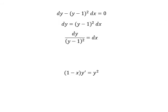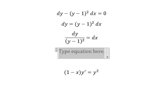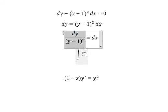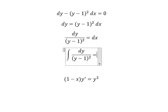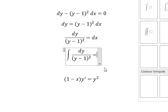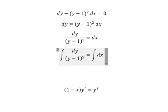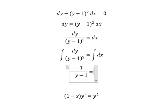Next we put the integration for both sides. The integration of this one, you got negative 1 over (y minus 1). The integration of dx, you got x.